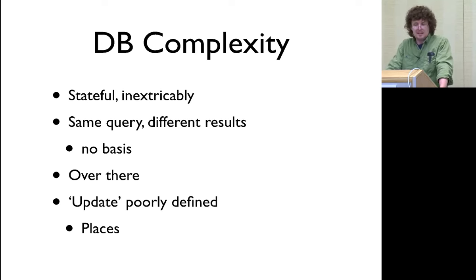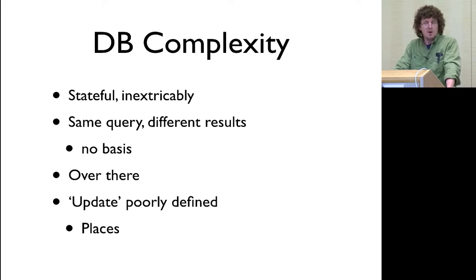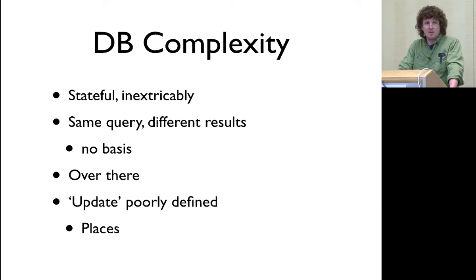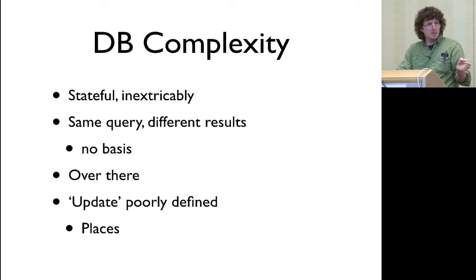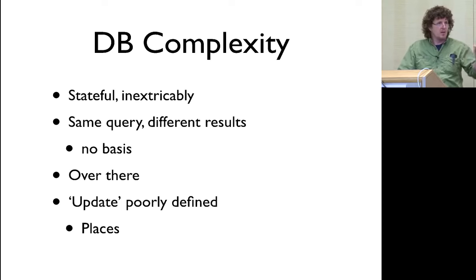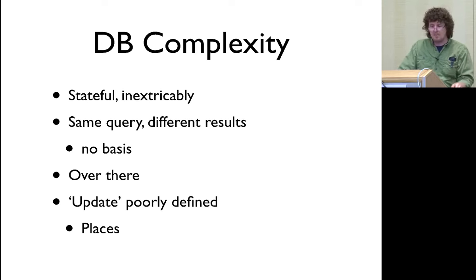So how do we do that better? It's certainly easy to see the complexity we have from interacting with databases. In the large, we have a bunch of problems. The first is that they're stateful. Of course they're stateful — their job is to maintain state. State itself is inherently complex because it combines values and time. The big problem with databases is that there's no way out, no way to get away from the statefulness. The statefulness is inextricable, and that's really the problem. We see this by issuing the same query over and over again to a database — you get different answers.